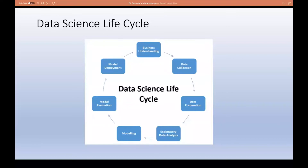Let's look at the data science project lifecycle. This applies to applied research where you have or have collected data and want to do analysis. We can start in two ways: either with business understanding, or with already-collected data. In the first approach, as a business expert or data scientist, you identify a need for an AI or data science project, formulate a problem, figure out data sources, and then move to data collection.